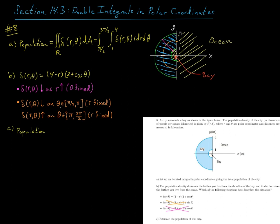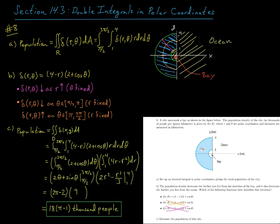All right, and the last part says estimate the population of the city. And that's just really asking us to compute this double integral up here that we set up. And so I've gone ahead and just done that for you here. And you can pause the video and check for yourself. But you wind up getting 18 times the quantity pi minus 1000 people. So it's about 38 and a half thousand people roughly.